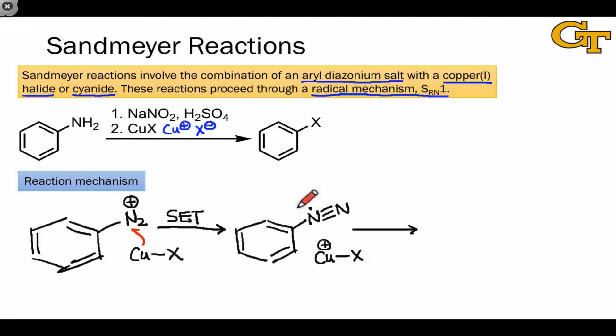The next step is one we're familiar with from a radical context, homolytic cleavage of the carbon-nitrogen bond. And this is driven primarily by the formation of nitrogen gas, which bubbles out of solution. Because one of the products is a gas that escapes solution, this step is essentially irreversible. And it generates a phenyl radical, which is a key intermediate.